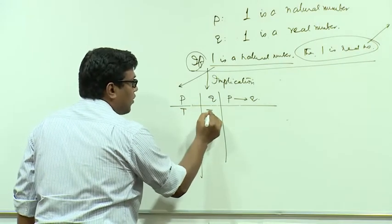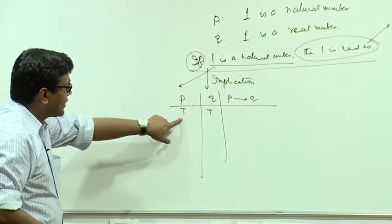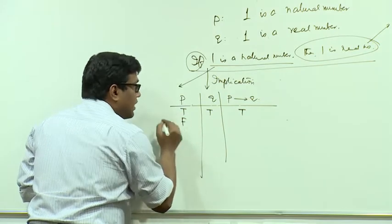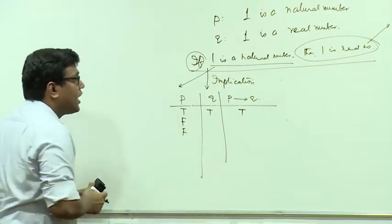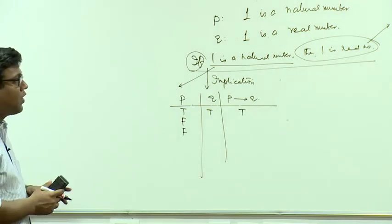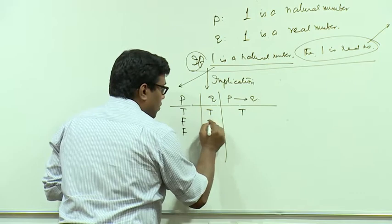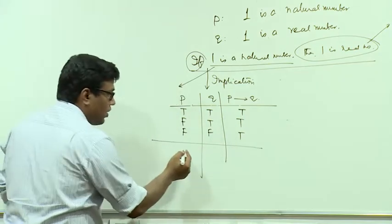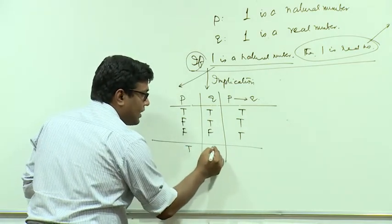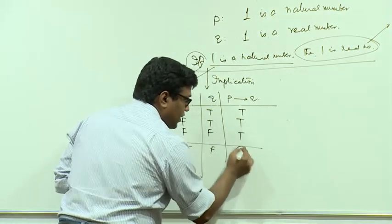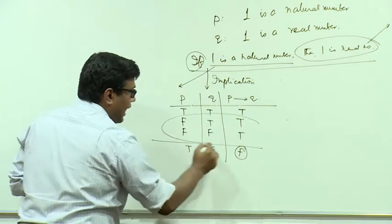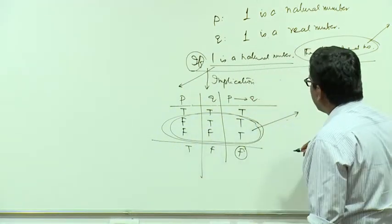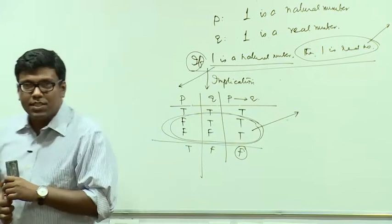For the truth table of 'P implies Q': if both the antecedent and consequent are true, the implication is true. If the antecedent is false, we don't even need to look at the truth value of the consequent — the implication is true. The only situation when an implication is false is when the antecedent is true and the consequent is false. The cases where the antecedent is false making the implication true are called vacuously true situations.